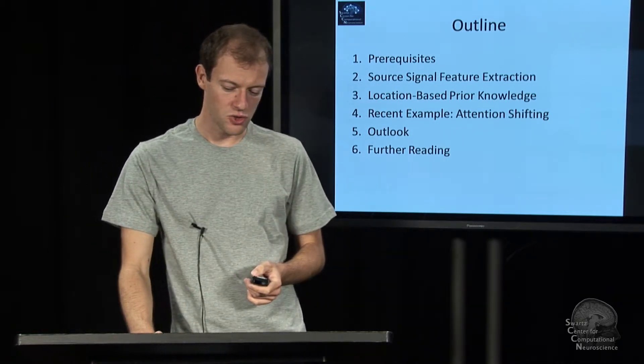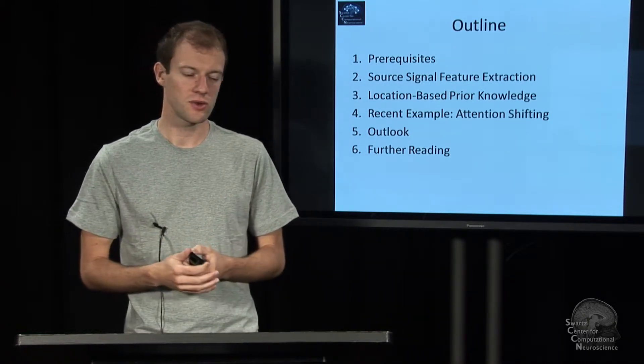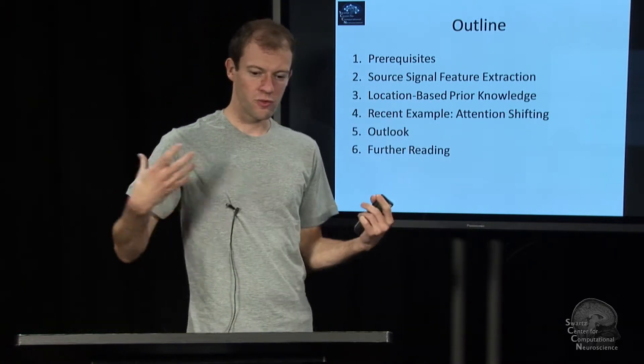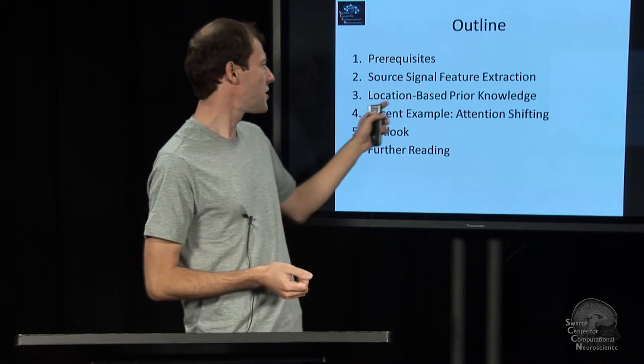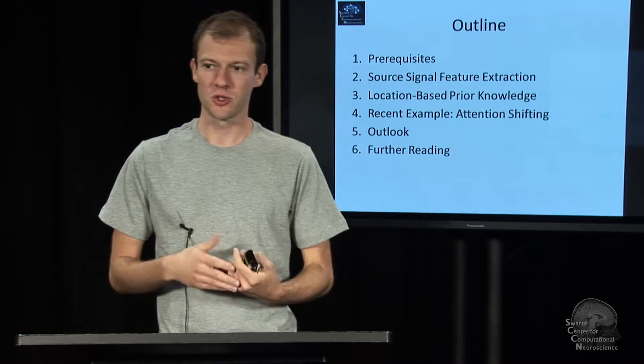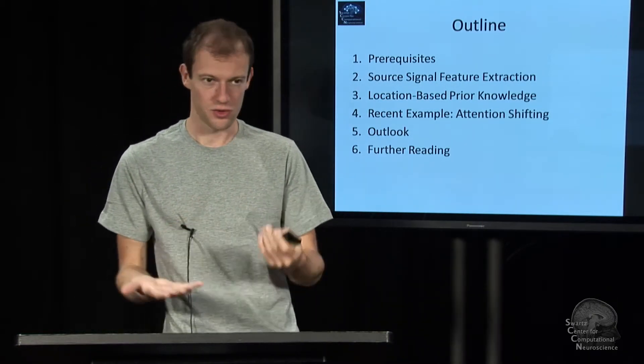And then we'll discuss how to take these kinds of features and representations and to assign prior knowledge and weave that prior knowledge into your method, say as actual assumptions and so on, and use specifically prior knowledge that is based on brain location, which is one of the nice tricks that you can do when you are having source-resolved data.